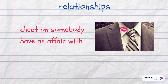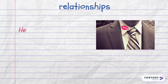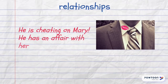To cheat on somebody means to secretly be in a relationship with someone other than your husband, wife, or partner. To have an affair with someone is when two people who are not married to each other have a relationship, mostly based on sex. For example: He is cheating on Mary. He has an affair with her friend.